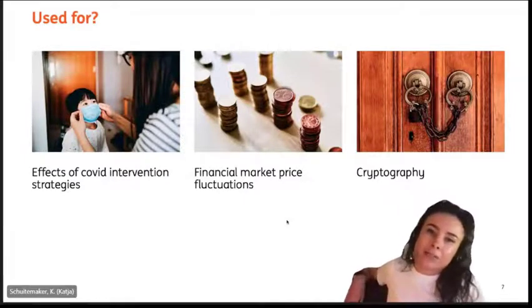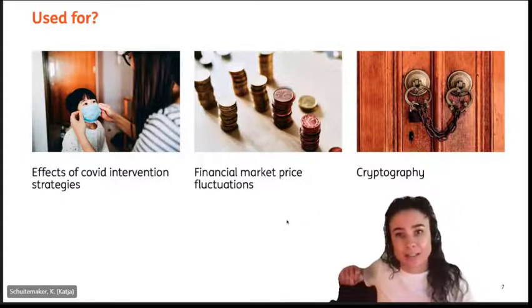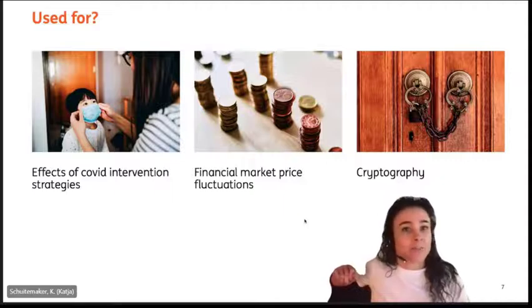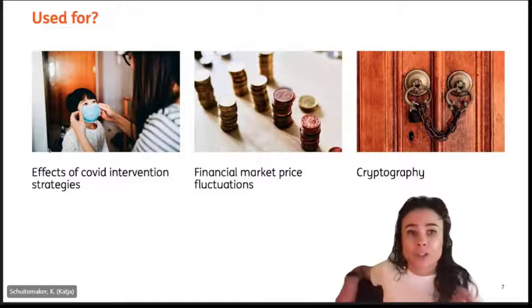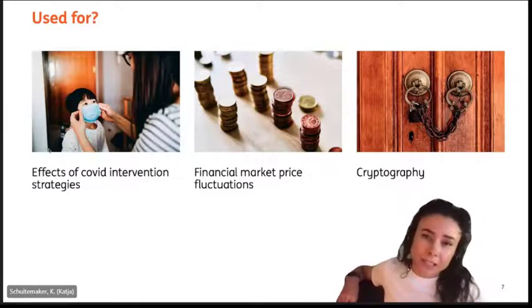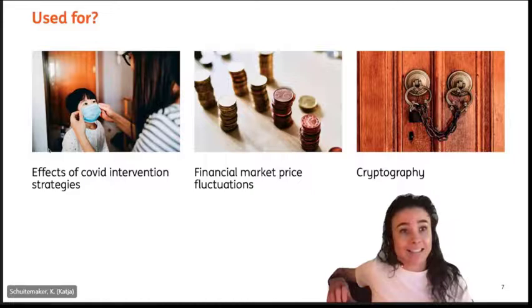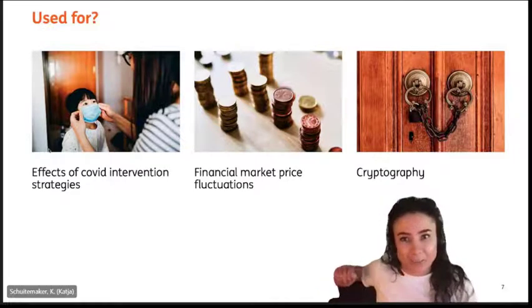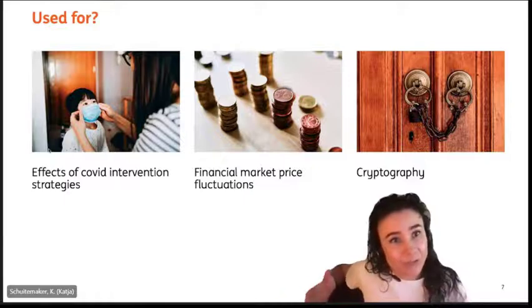Cellular automata can be applied in various areas to model processes in physical, chemical, biological systems and computer science. Some examples are the effects of COVID intervention strategies or financial market fluctuations, but also constructing pseudorandom number generators and designing error correction codes in cryptography. Another example of a cellular automaton is what you're actually looking at right now — the CPU of your computer.